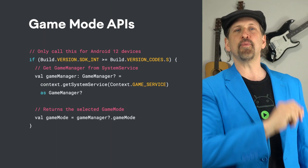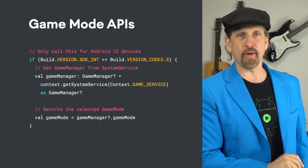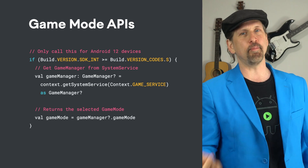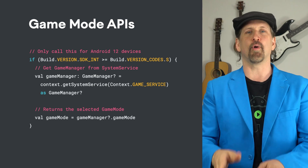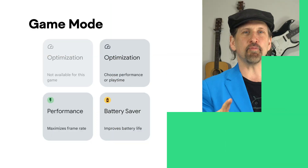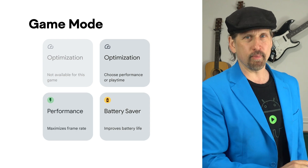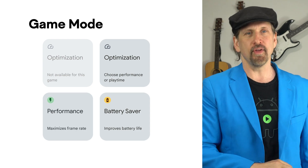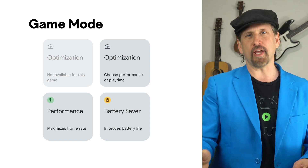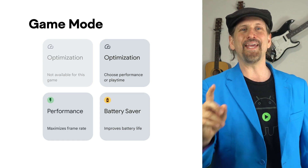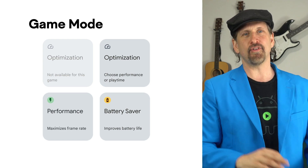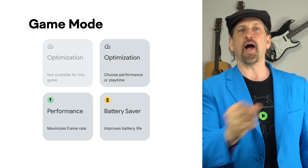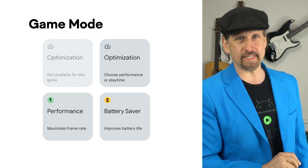Android 12 also introduces game mode APIs to allow gamers to pick performance profiles, such as better battery life or performance mode. It's powered by a performance stack that allows Android to communicate the player's preferences so you can adjust your game accordingly, and intervene on their behalf with game mode interventions that automatically adjust the game. You can opt out with a manifest setting.